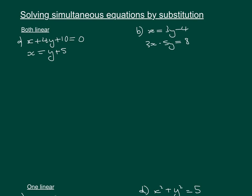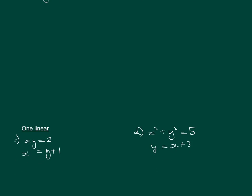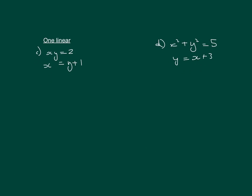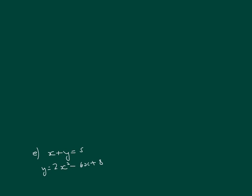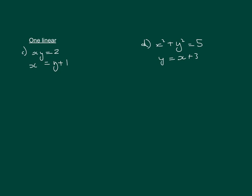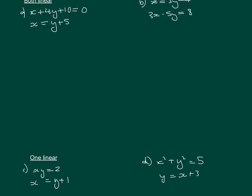In this video we're going to be solving simultaneous equations by substitution. We've got two examples where we're looking at linear equations, and then three examples where there's one linear and one different type of equation — a quadratic, a circular graph, and then a different type of graph.